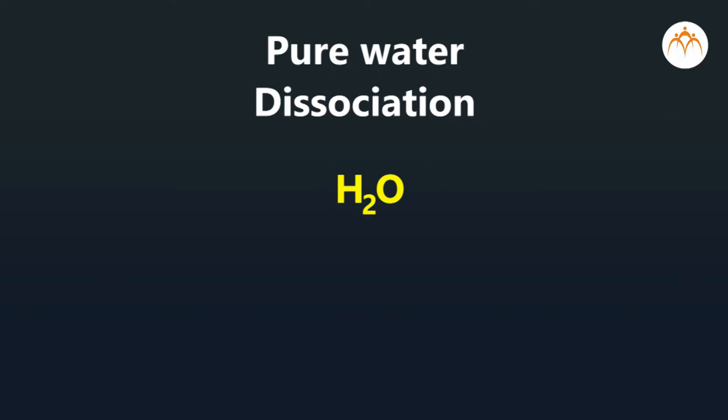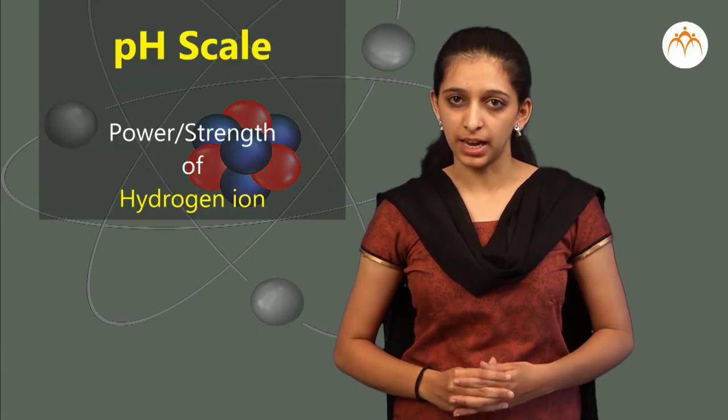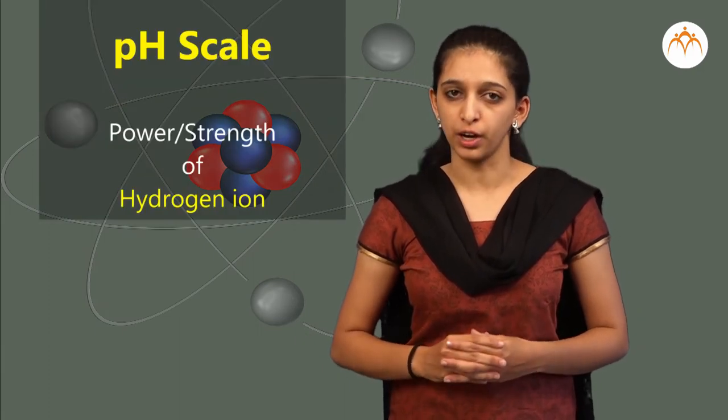Water dissociates to a smaller extent to give H+ and OH- ions in equal proportions. Scientist Sorensen introduced a new scale to measure H+ ion concentration, and it is called the pH scale - that is, power or strength of hydrogen.